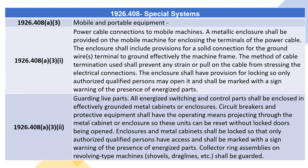1926.408(A)(3)(ii) — Guarding Live Parts. All energized switching and control parts shall be enclosed in effectively grounded metal cabinets or enclosures. Circuit breakers and protective equipment shall have the operating means projecting through the metal cabinet or enclosure so these units can be reset without locked doors being opened. Enclosures and metal cabinets shall be locked so that only authorized qualified persons have access and shall be marked with a sign warning of the presence of energized parts. Collector ring assemblies on revolving type machines — shovels, drag lines, etc. — shall be guarded.